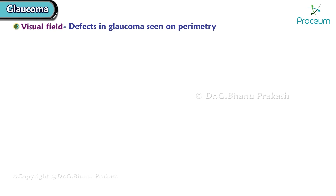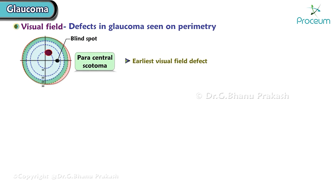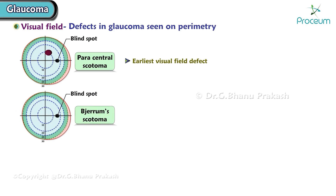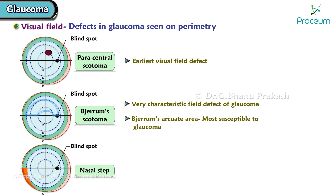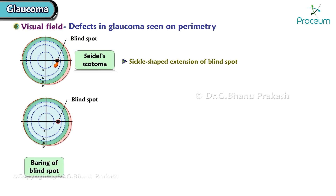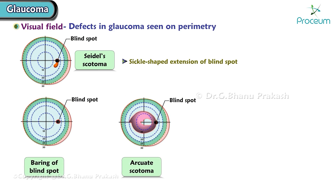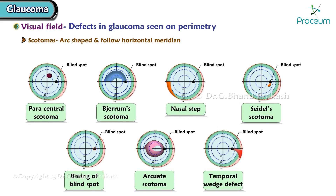The various visual field defects in glaucoma seen on perimetry are: paracentral scotoma, the earliest visual field defect; Bjerrum scotoma, a very characteristic field defect of glaucoma — the Bjerrum's arcuate area is most susceptible to glaucoma; nasal step, also a characteristic field defect; Seidel scotoma, a sickle-shaped extension of the blind spot; enlargement of the blind spot; arcuate scotoma; and temporal wedge defect. Most scotomas are arc-shaped and follow the horizontal meridian.